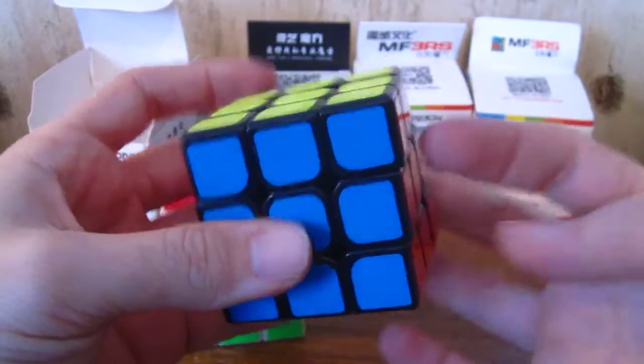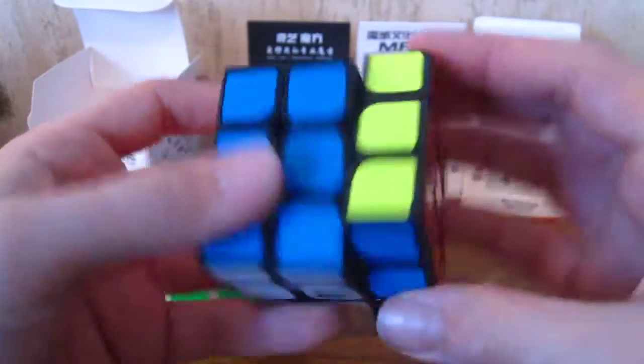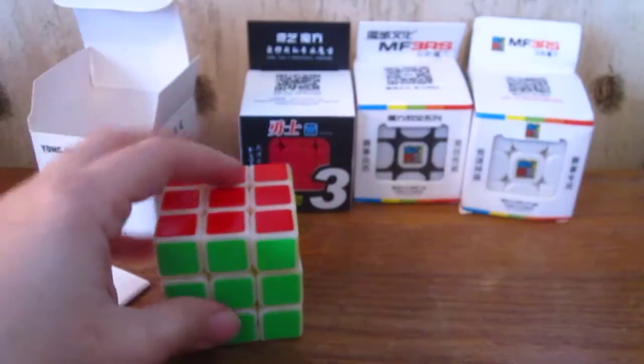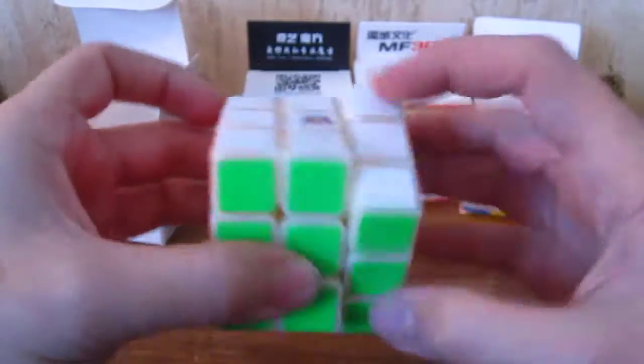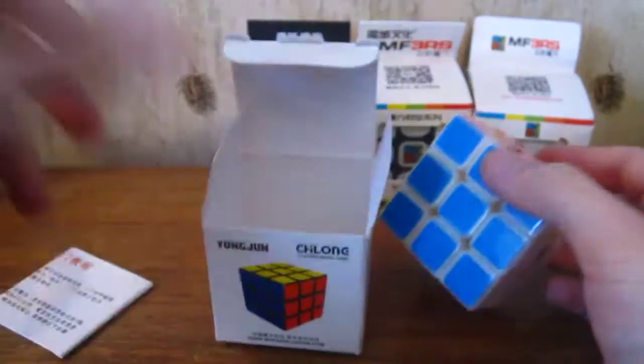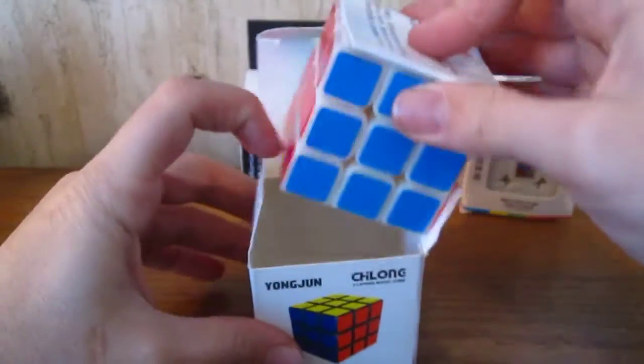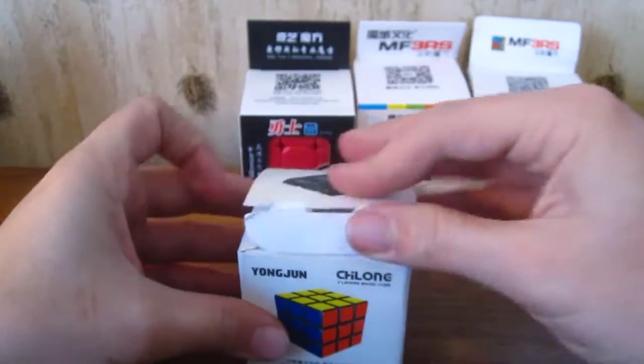However, this cube, this Hualong is broken in very well and lubed with DNM 37. That's pretty cool. Let me know if you guys have a Hualong and what you think of it if you do have one. But I'm going to check out that cube some more.